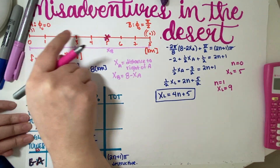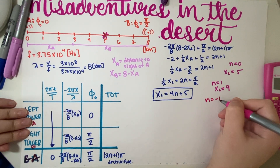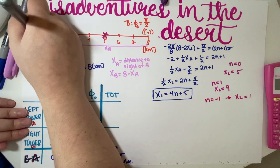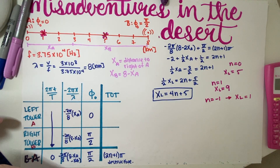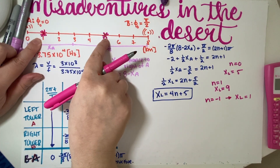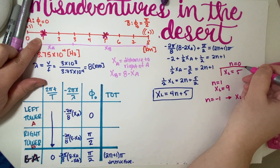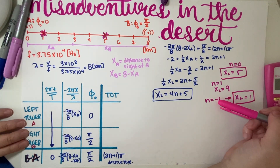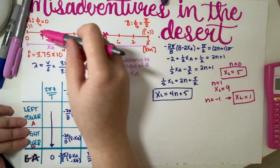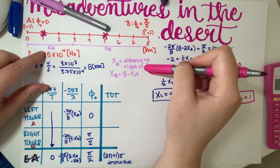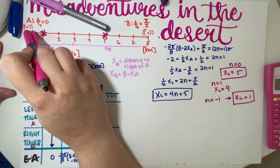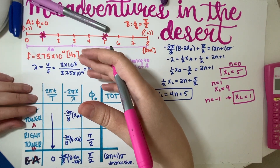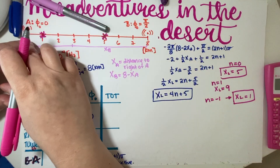For n = −1: x_l = −4 + 5 = 1. That works — that's the other answer. I can't go further: n = −2 gives −8 + 5 = −3, which is negative, meaning it falls outside the physical region to the left. So the final answers are x = 5 km and x = 1 km.